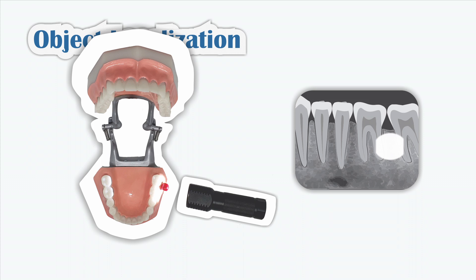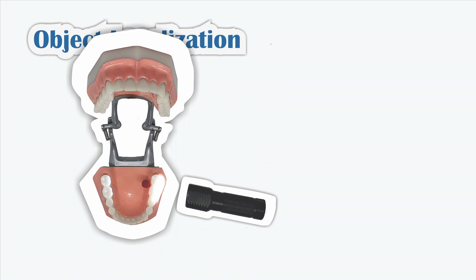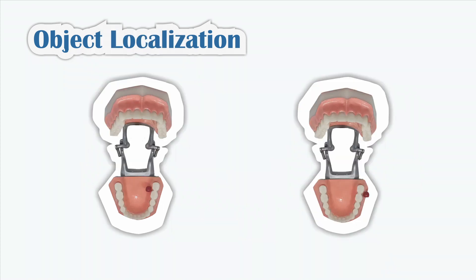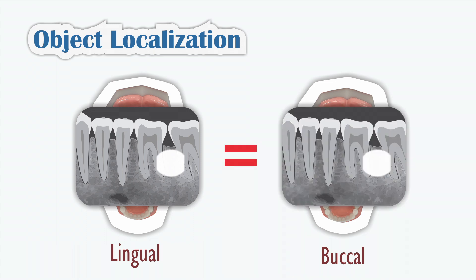There is a radiopaque object between the root of 36 and 37. Then, on the second condition, we see the red object is lying on the lingual of the teeth. Same as before, we expose the object with x-ray, and we will get the same image as the first illustration. Imagine the object is inside the alveolar bone, and we do not know whether it is on the buccal or lingual aspect of the teeth.